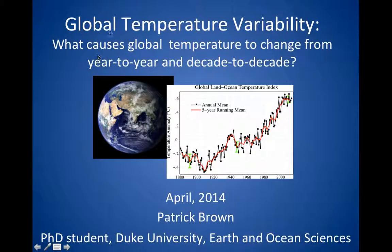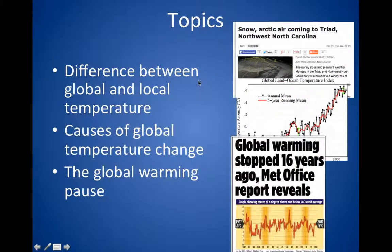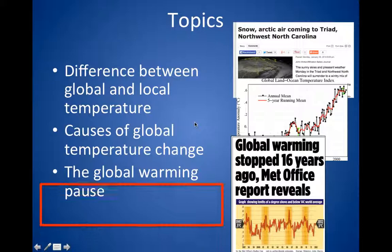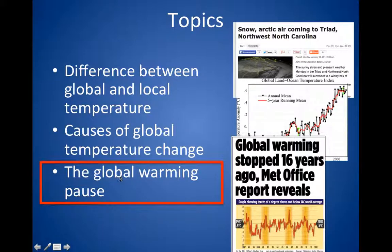Alright, welcome back to our video series on global temperature variability. In the last video we talked about the causes of global temperature change and the physics behind why temperature should change. We talked about forced versus unforced variability, and we are going to use that information now to assess the so-called pause in global warming and figure out what's actually going on with current temperature trends.